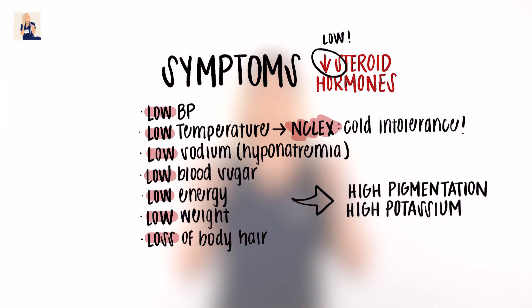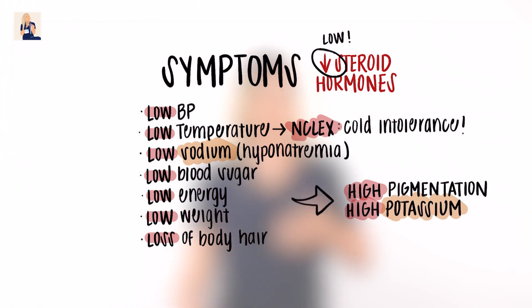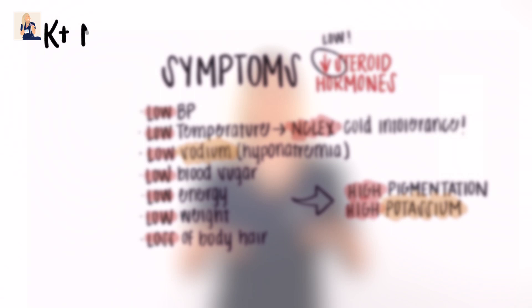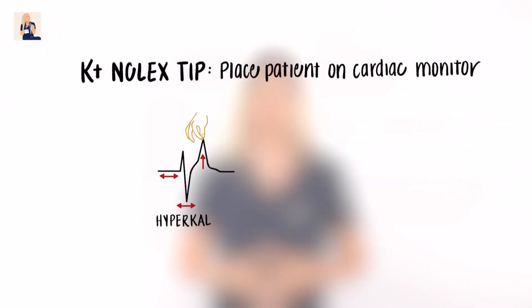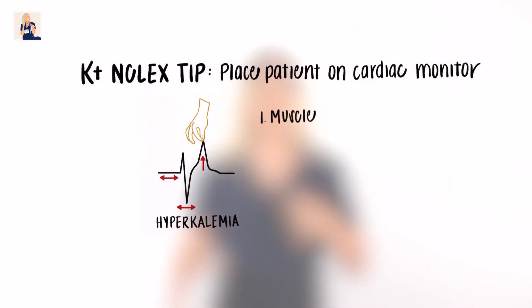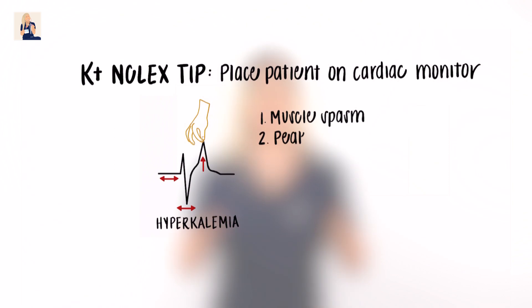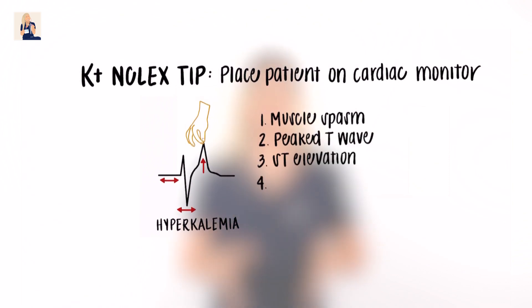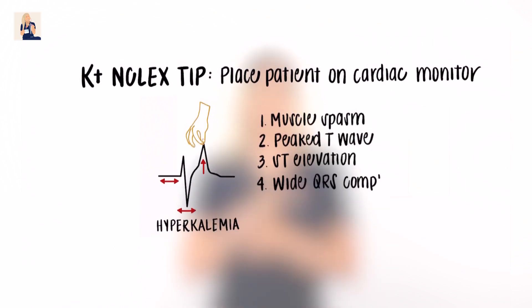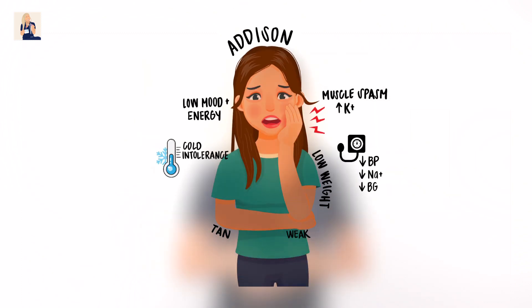Two symptoms that break the 'low' pattern are high pigmentation and high potassium, or hyperkalemia — remember, if sodium is low, potassium is high. NCLEX tip: any time we mess with potassium, we must put these patients on cardiac monitors. Hyperkalemia can cause muscle spasms, peaked T-waves, and ST elevation. To remember all these symptoms, picture Addison — our skinny, weak, tan girl.